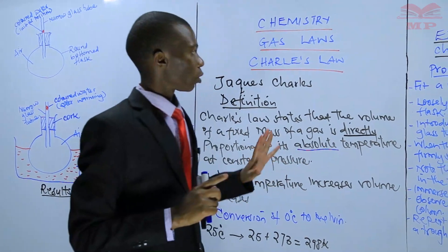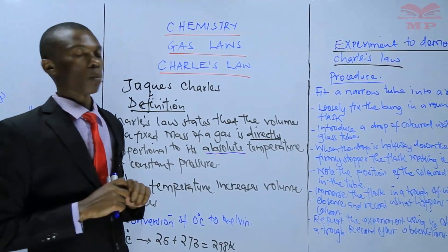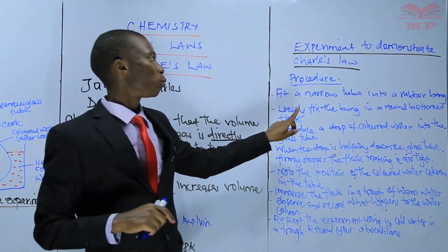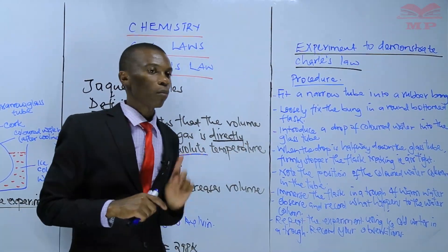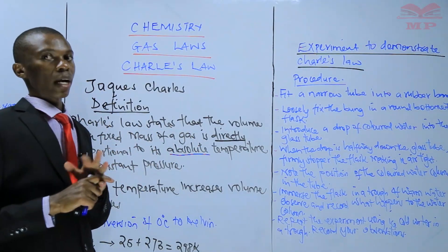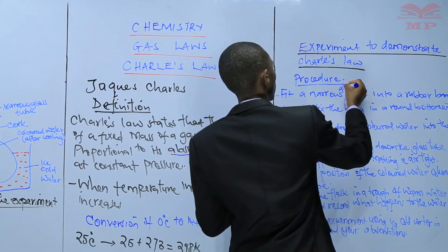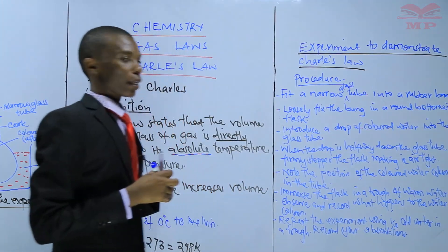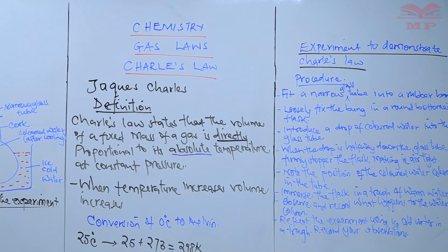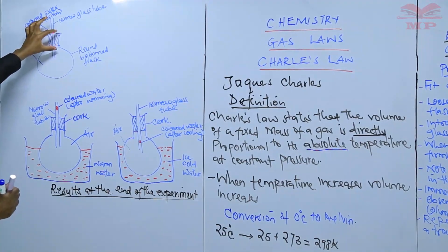This is the experiment — this is the procedure of how to go about the experiment. First, you are supposed to fit a glass tube into a rubber bung. This is the glass tube, and you fit it into the rubber bung.